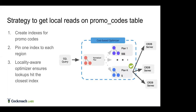To recap how a cost-based optimizer works: it takes your queries, looks at thousands of ways to evaluate them, examines statistics and characteristics of the table to figure out the best-performing plan. With CockroachDB we built this from the ground up to look not just at the characteristics of the table but where in physical space the data is, and use that to inform planning. That's what will enable this new pattern.